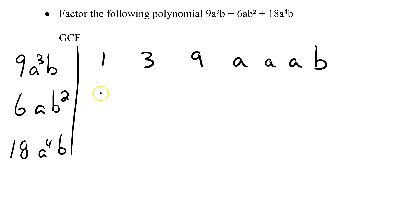6: I've got 1 and 6, 2 and 3, and that's all. I've got 1a and 2 b's. Finally, 18: I've got 1 and 18, 2 and 9, 3 and 6. 4 doesn't go and 5 doesn't go. For my letters, I've got 4 a's: 1, 2, 3, 4. And I've got 1b.